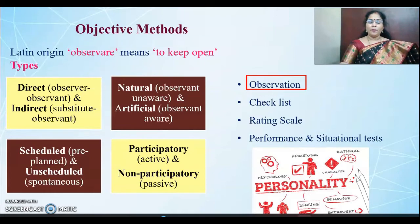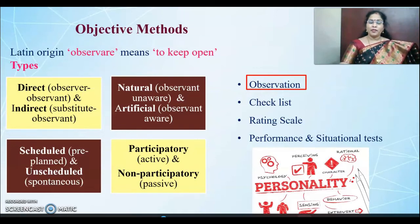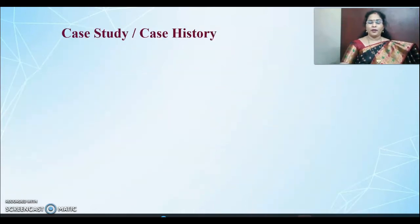Participatory and non-participatory observation: in participatory observation, the observant will be actively taking part. In non-participatory observation, the observant will be very passive. These are the objective types of methods through which a person's personality can be observed and reported.